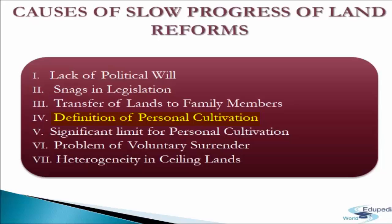The fourth point is definition of personal cultivation. The definition of personal cultivation was not satisfactory. As per legal provisions, personal supervision was taken to be a part of personal cultivation, and even this does not require supervision by the landlord himself. Rather, it was sufficient if the supervision was done by a member of the landlord's family. The next cause is significant limits for personal cultivation. Due to the defective definition of personal cultivation, intermediaries were permitted to retain a significant area of land, enabling zamindars to retain large areas for cultivation, thus defeating the basic purpose of zamindari abolition.